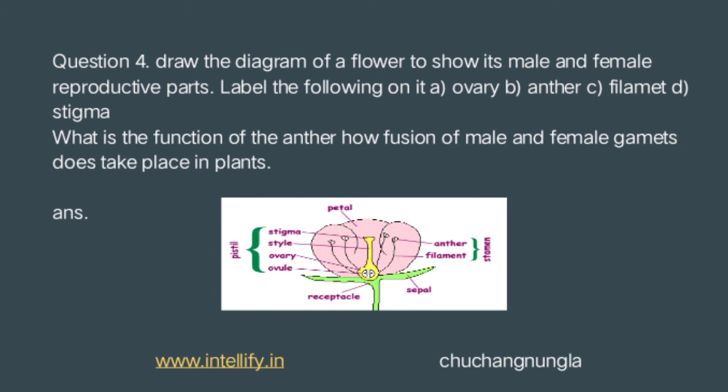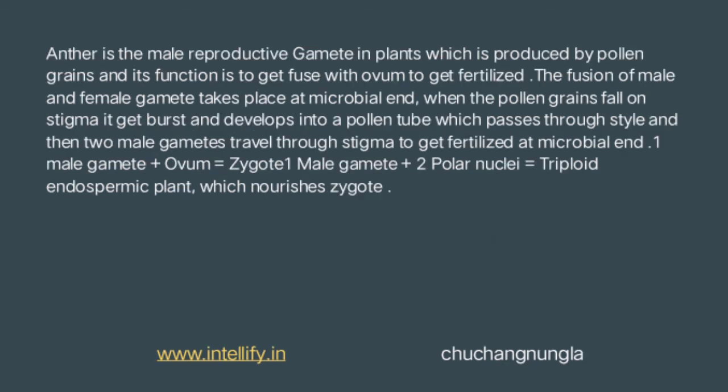Question 4: Draw the diagram of a flower to show its male and female reproductive parts. Label the following: ovary, anther, filament, and stigma. The anther is the male reproductive organ in plants, which produces pollen grains. Its function is to get fused with the ovule to achieve fertilization. The fusion of the male and female gametes takes place at the micropyle end. When the pollen lands on the stigma, it bursts and develops into a pollen tube.